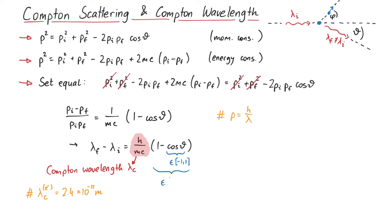the quantity in brackets can only lie between zero and two. Therefore, the final wavelength of the photon can change up to two times the Compton wavelength, depending on the scattering angle.